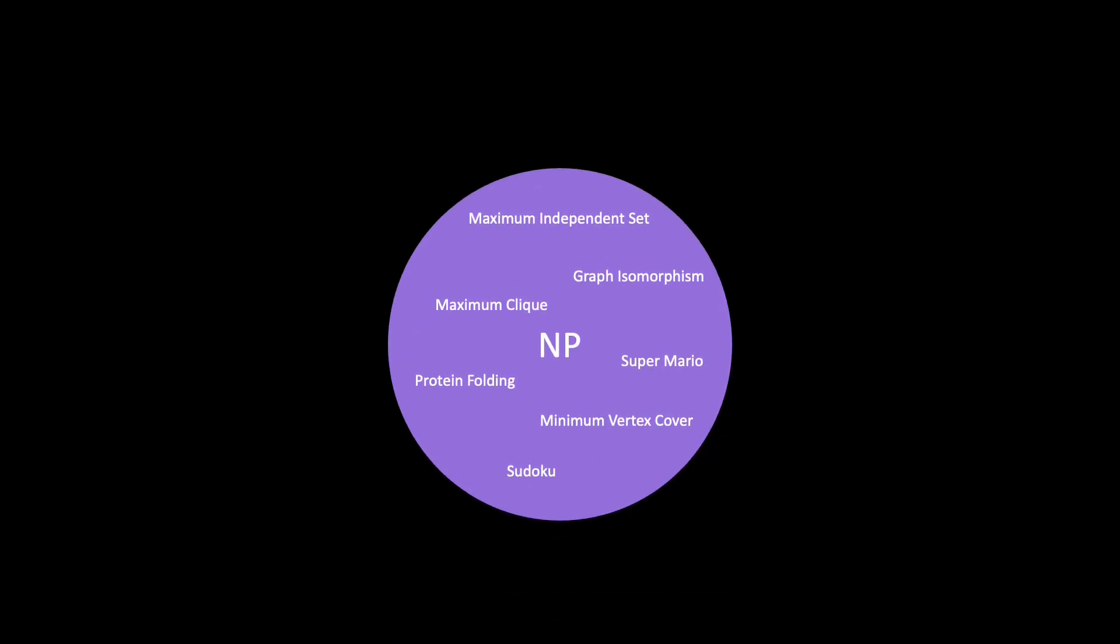The class NP contains many problems, for example, minimum vertex cover, maximum independent set, maximum clique, Sudoku, graph isomorphism, Super Mario, and protein folding, needed to cure cancer. These are all examples of problems in NP, but there are millions more.